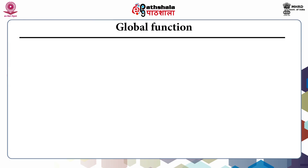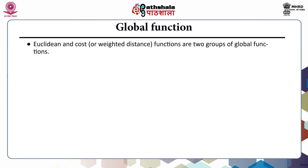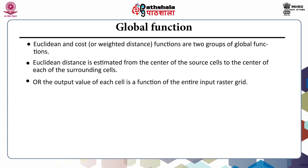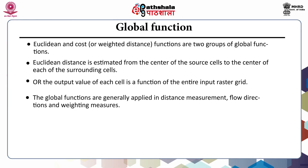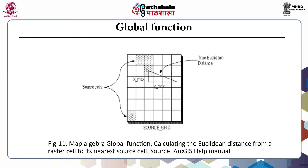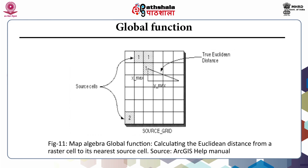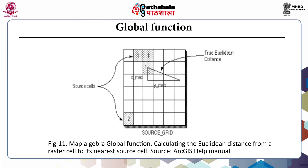The last is the global function. Euclidean and cost or weighted distance functions are the two groups of global functions. Euclidean distance is estimated from the centre of the source cells to the centre of each of the surrounding cells — that is, the output value of each cell is a function of the entire input raster grid. The global functions are generally applied in distance measurement, flow direction and weighting measures. This figure shows the map algebra global function where we calculate the Euclidean distance from a raster cell to its nearest source cell.